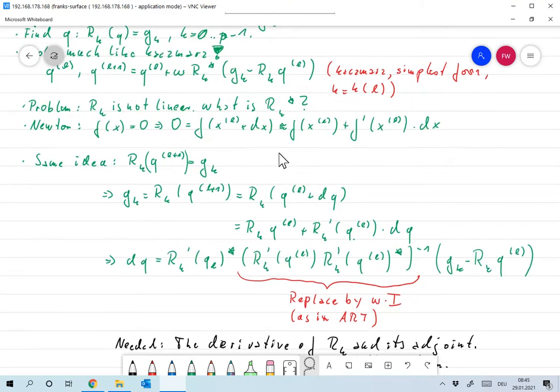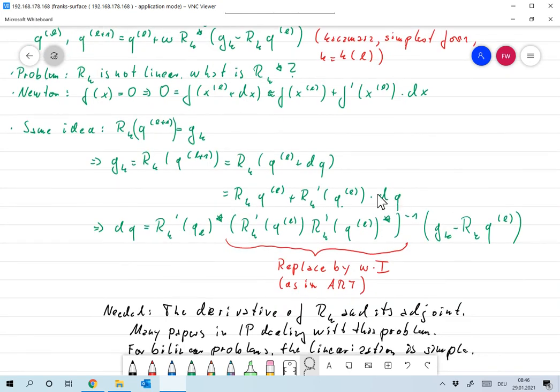So why don't we do exactly the same? In the Kaczmarc's algorithm, let's assume we are already at QL and we are trying to fit the equation, the kth equation. So RK times Q of L plus 1 should be GK, and as in the Newton idea, we set QL plus 1 as QL plus DQ and approximate this one using the first derivative, whatever that may be, and write it as RK of QL plus RK prime of QL times DQ, and now DQ is the solution to a linear equation.